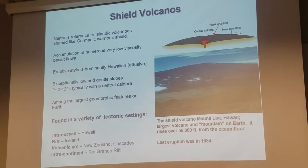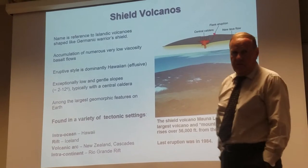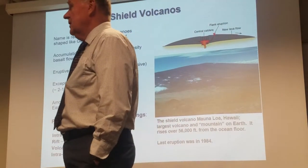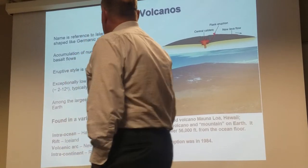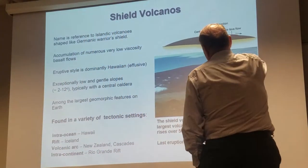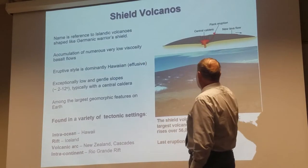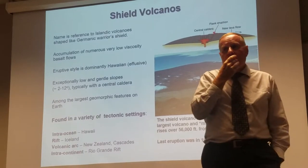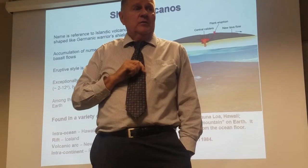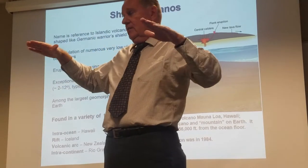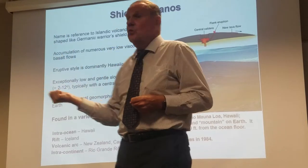The next ones are shield volcanoes, and these are by far the largest geomorphic objects on Earth — in fact, they are the largest geomorphic objects in the solar system. The name 'shield' comes from Iceland, where there are shield volcanoes, though the really big ones are from Hawaii. It's named because it looks like you take one of the Germanic shields used in battle and turn it upside down.